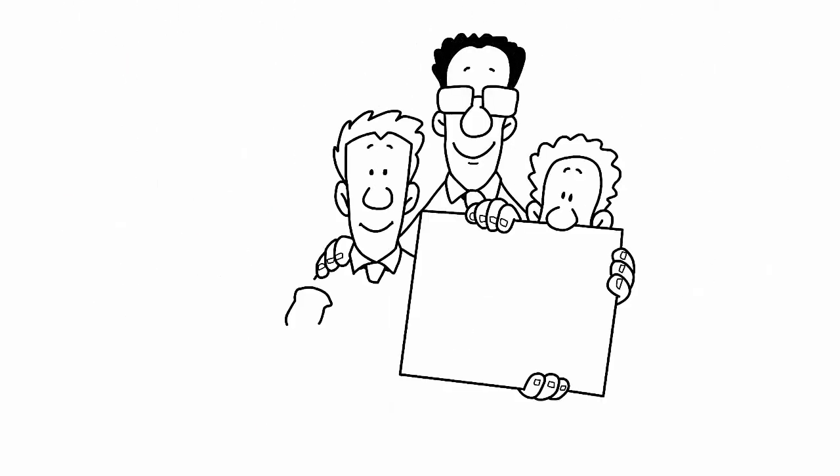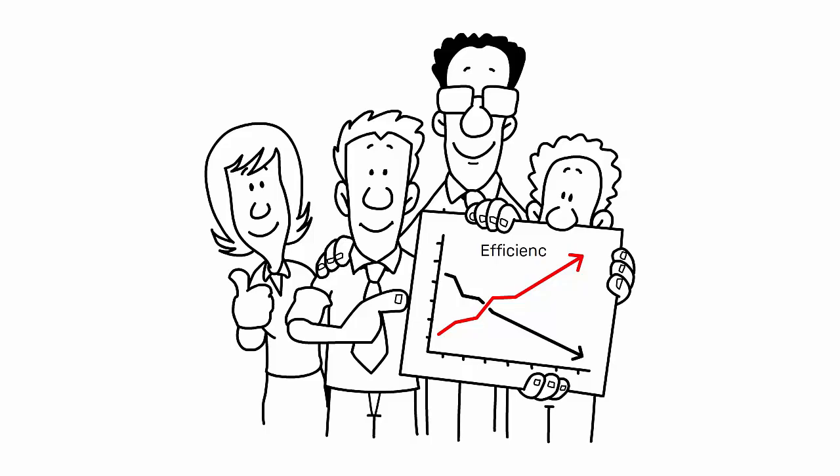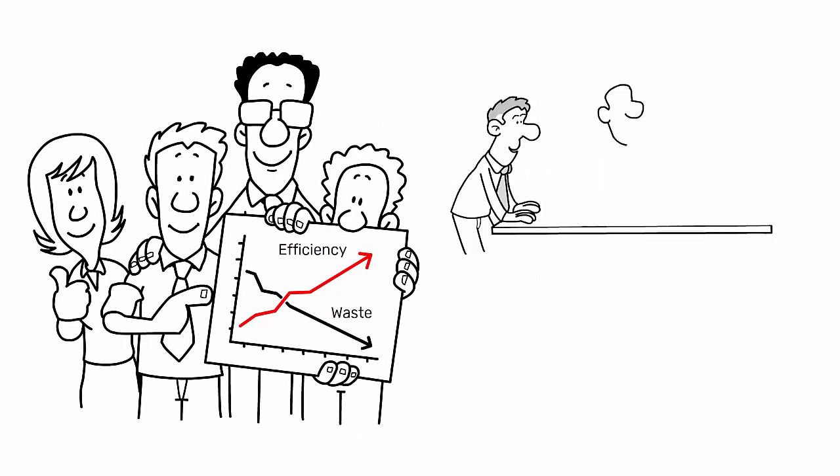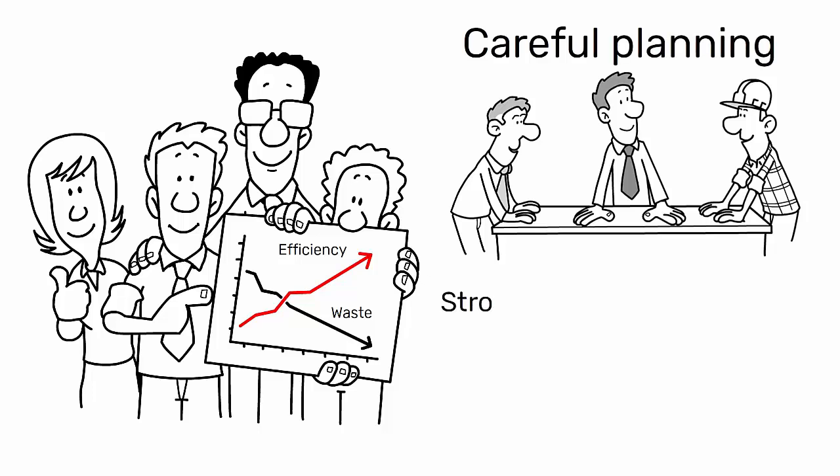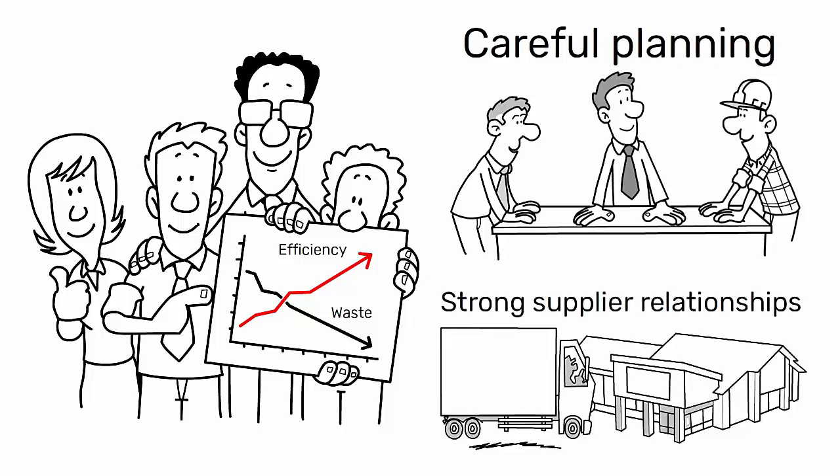In conclusion, J-I-S is a powerful strategy for improving efficiency and reducing waste in the production process. However, it requires careful planning and strong supplier relationships to implement effectively.